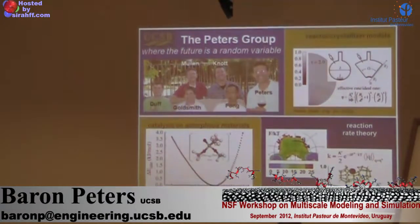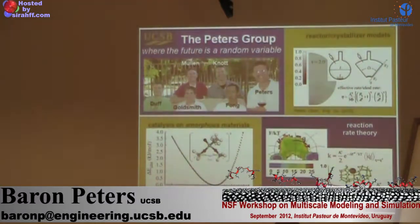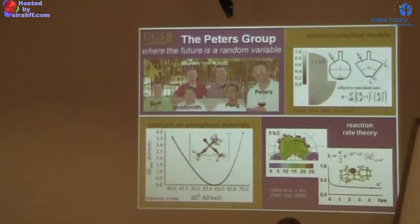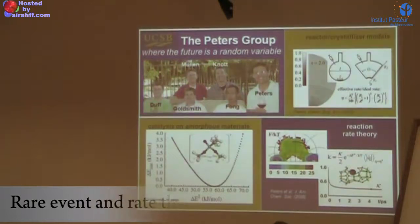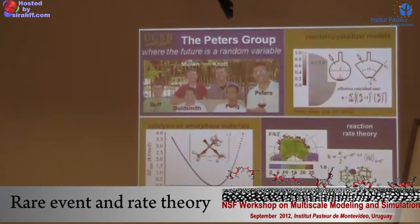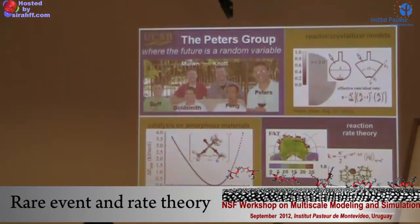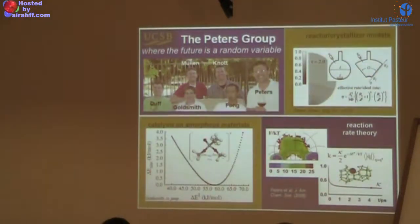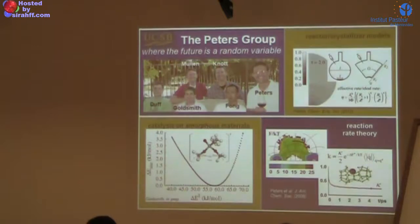Regarding the title slide with 'the future is a random variable' — in part because I'm not tenured yet, so it's really true that my future is a random variable, and hopefully that goes well this winter. I won't talk much about some of these topics, but I will talk a lot about transition state theory, which is integral to this analysis, and some methods for taking free energy landscapes — computed in lectures by Giovanni and Max — and going from those to rates.